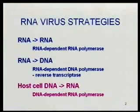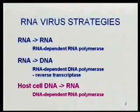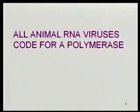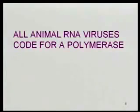Our cells do not seem to provide either an RNA-dependent RNA polymerase or an RNA-dependent DNA polymerase, because we do DNA to RNA — we don't do RNA to DNA, we don't do RNA to RNA. So our RNA polymerase is of no use to these RNA viruses, because it doesn't use RNA as a template. That means all animal RNA viruses, since we don't provide them with anything that will copy RNA, have to code for an RNA-dependent polymerase to copy their RNA into something else.